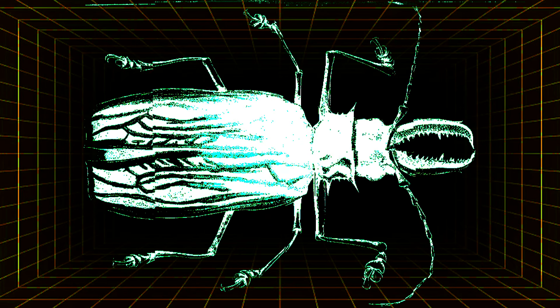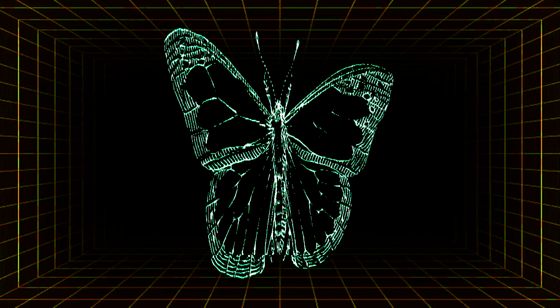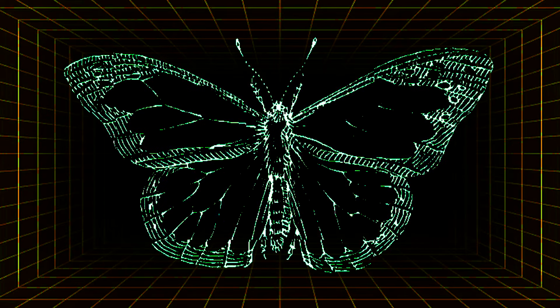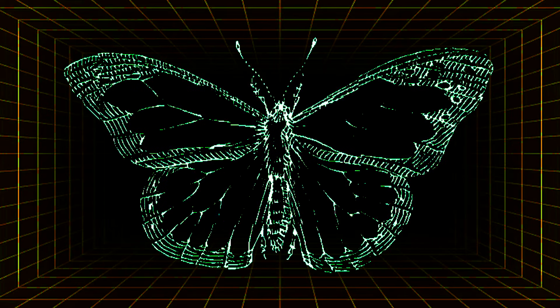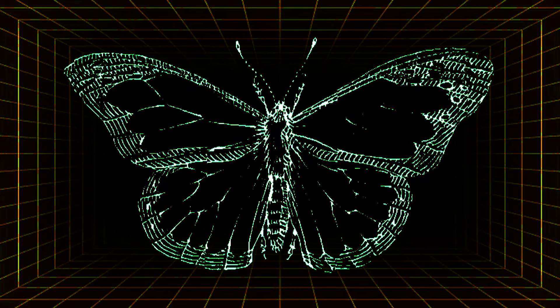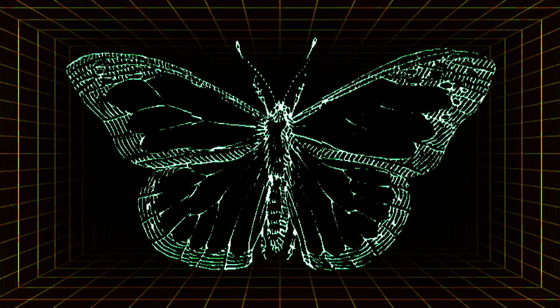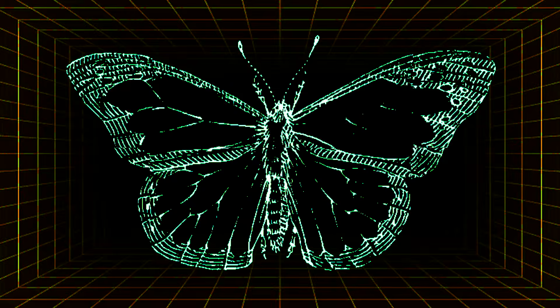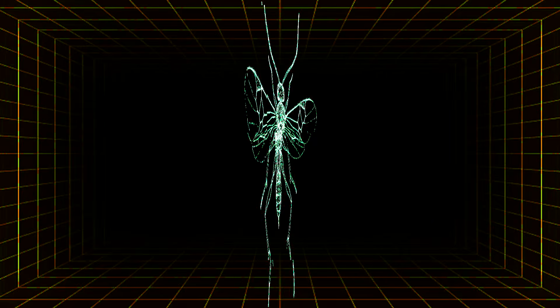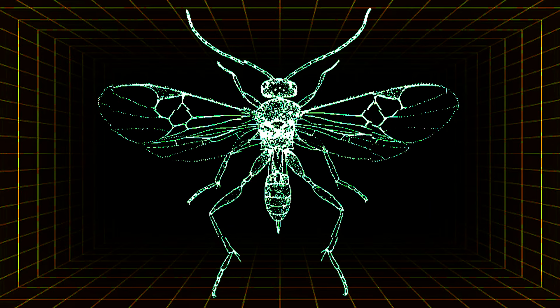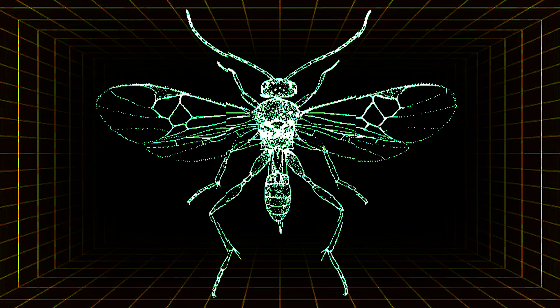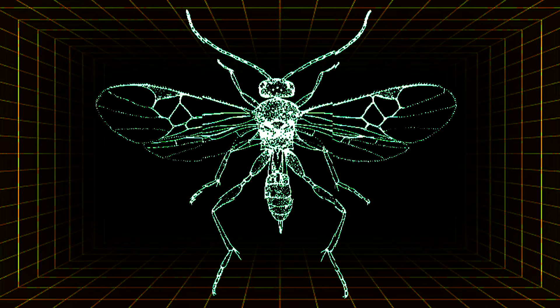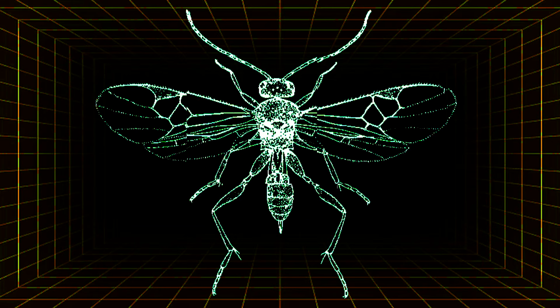The morphology of the termite is fairly straightforward beyond their caste system. There are variations with regards to head shape, mandibles, and even eyes across workers, soldiers, and reproductives. But overall, their body plan is quite simple, designed to be adaptable for the many tasks that termites perform. There's almost zero specialization in their abdomen across all species because they have an obligate specialization to containing the microbiome.